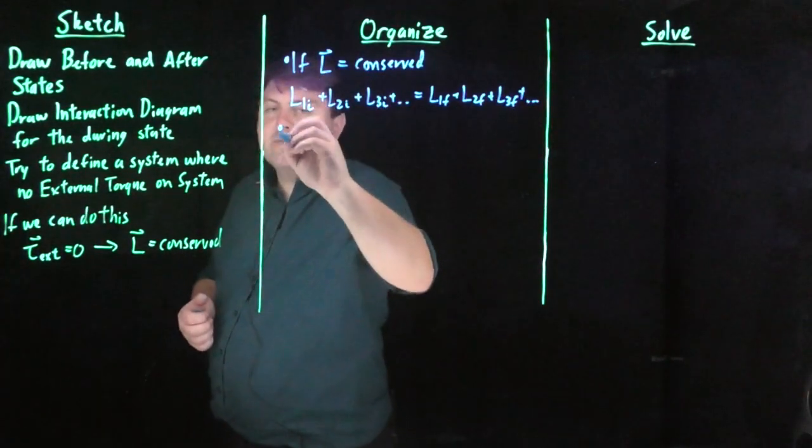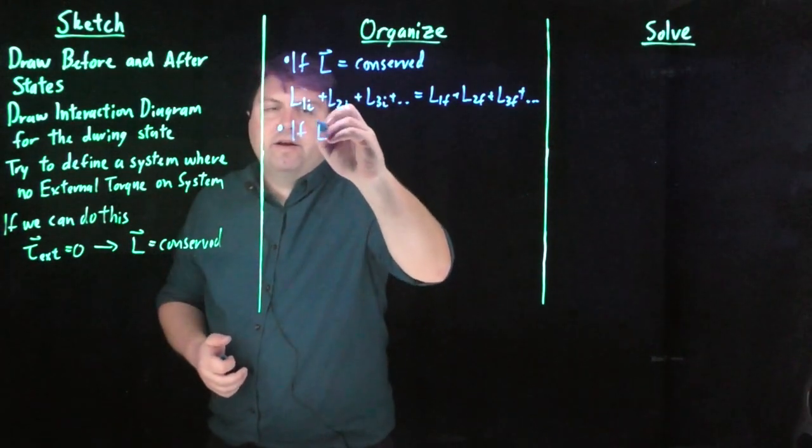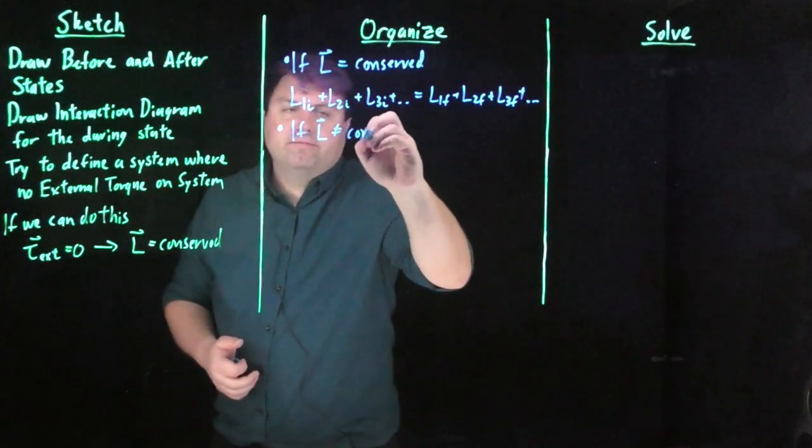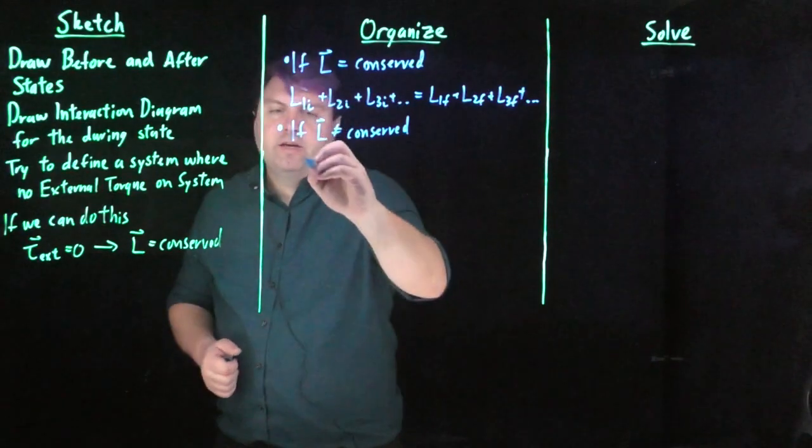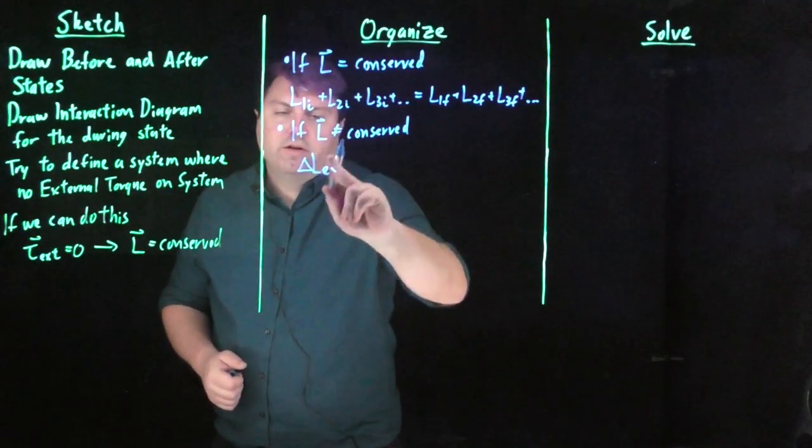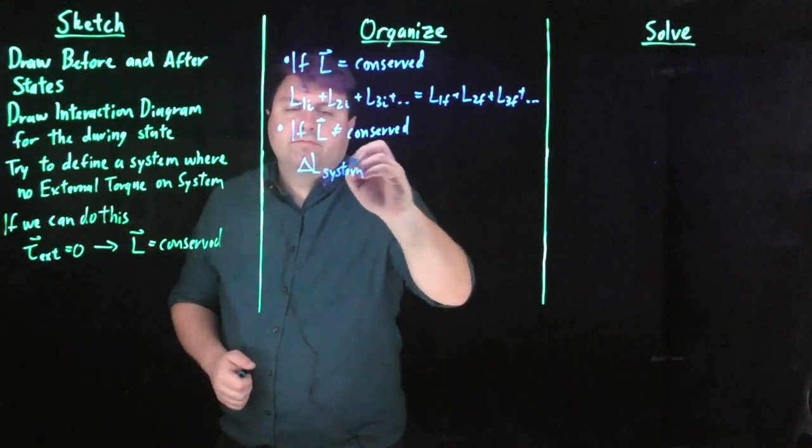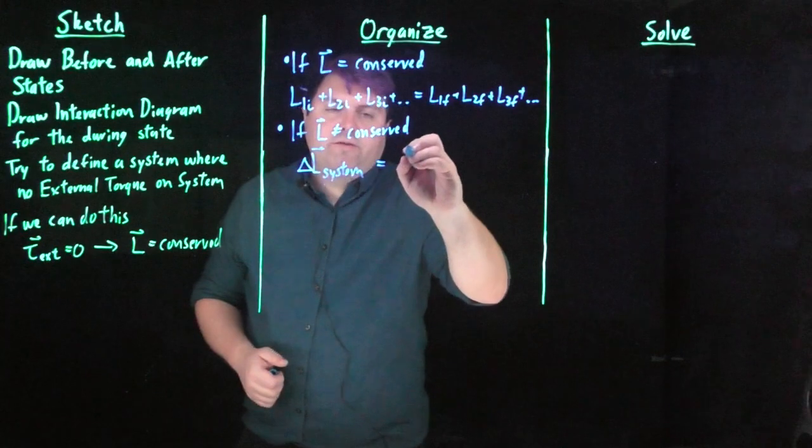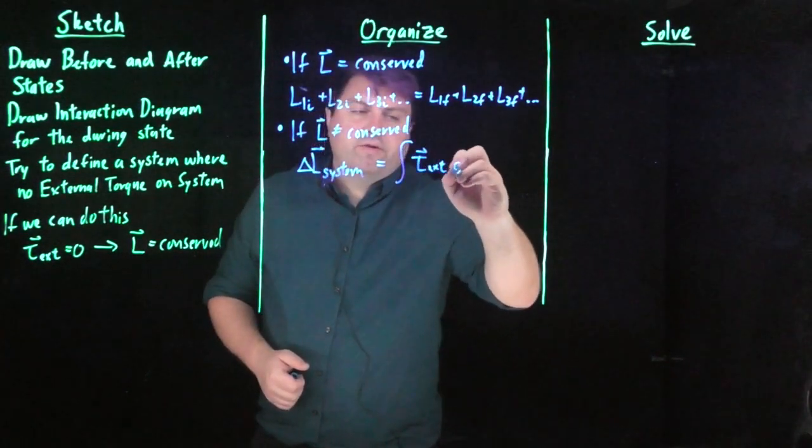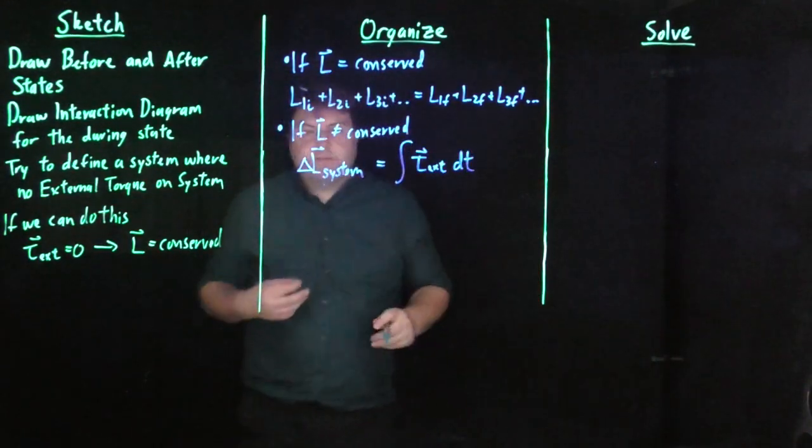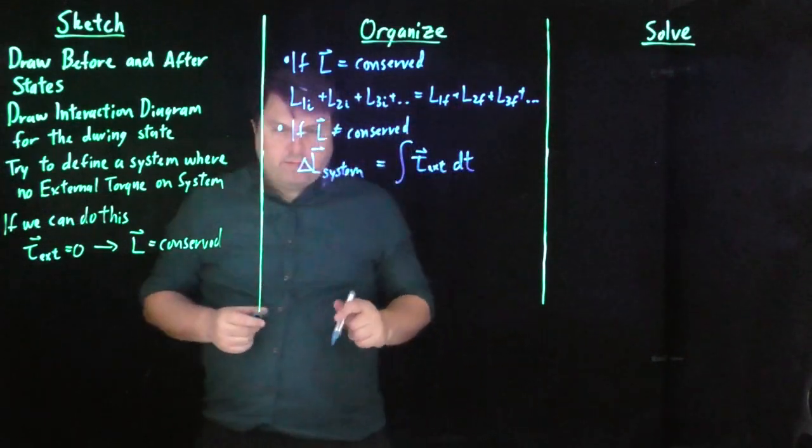Now, if we can't say this, we might have a problem in which we have an external torque being applied. So if our L is not conserved, what we are saying is the change in L of our system is equal to the integral of the torque over time, very similar to impulse. So if we're exerting an external torque, we can change the angular momentum of the system.